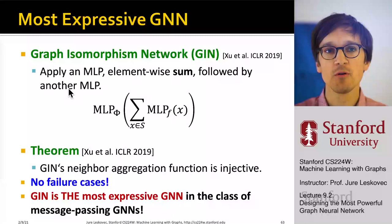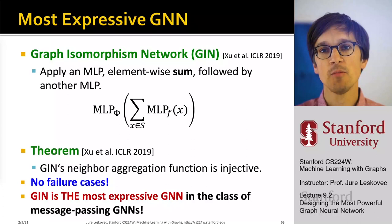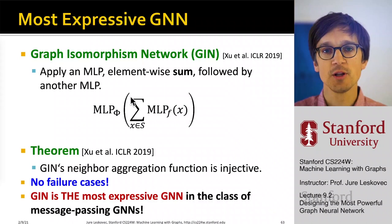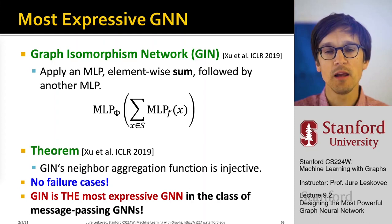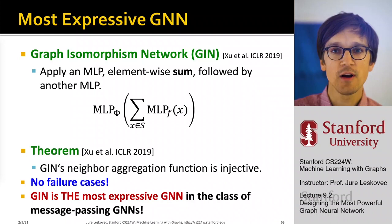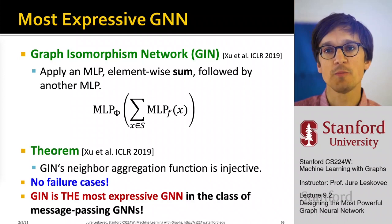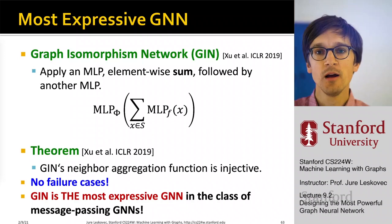The most expressive graph neural network is called the Graph Isomorphism Network, or GIN. Its aggregation function takes messages from children, transforms them with an MLP, sums them up, and applies another MLP. Given everything explained, this constitutes an injective multiset aggregation function with no failure cases and no collisions — making GIN the most expressive GNN in the class of message-passing graph neural networks.